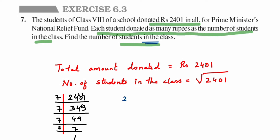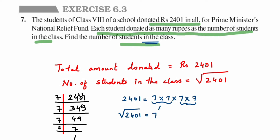So 2401 can be written as 7 × 7 × 7 × 7. When finding the square root, you make pairs of factors. Here we get two pairs of 7: the first pair and the second pair. From each pair you take one factor, so we get 7 × 7, which equals 49.